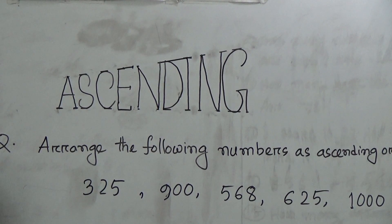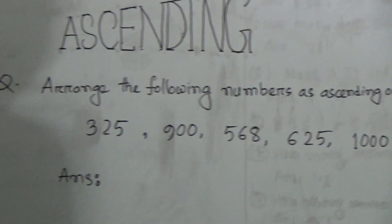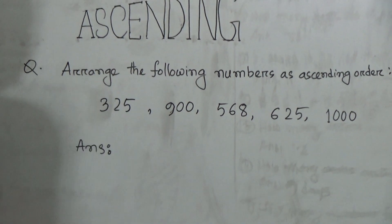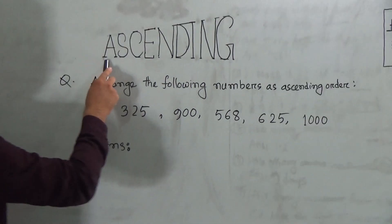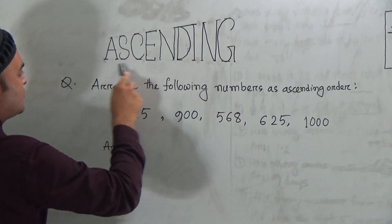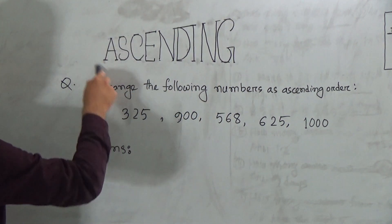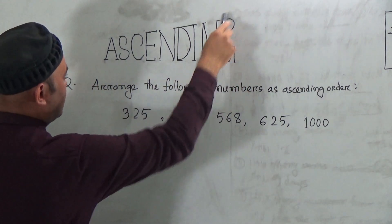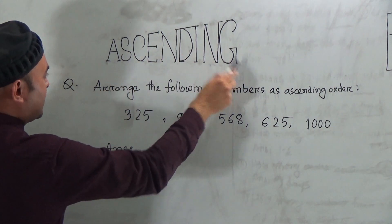My dear friends, before starting class, you have to know what is ascending. Ascending means small to biggest. Here A is the smallest and G is the greatest. So ascending means small to greatest.